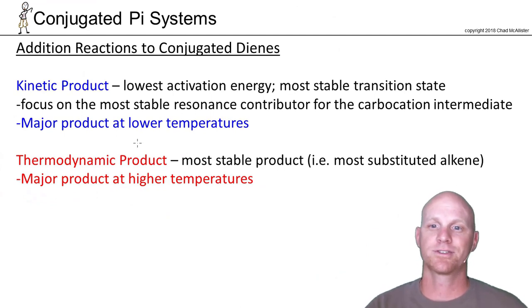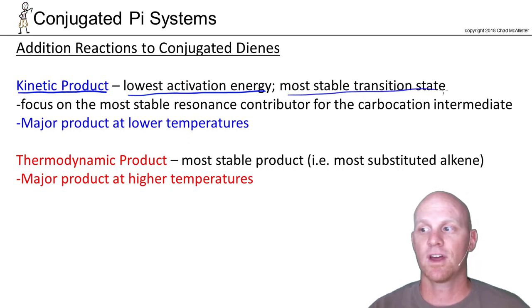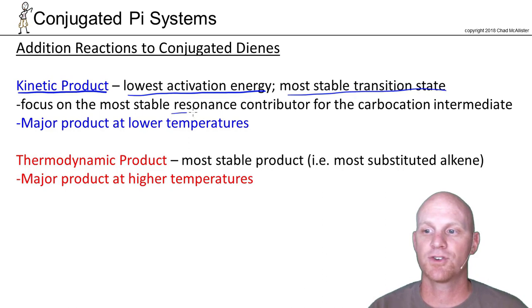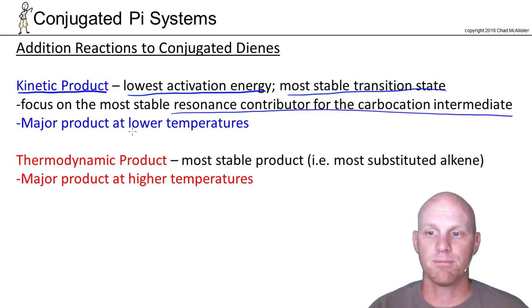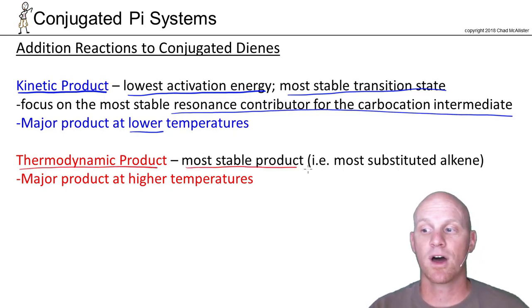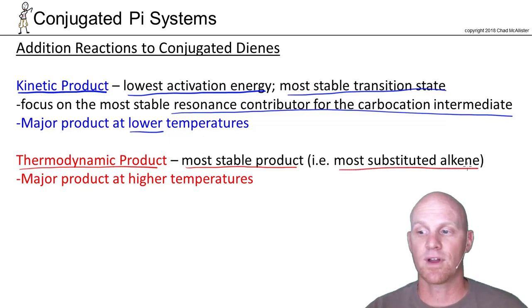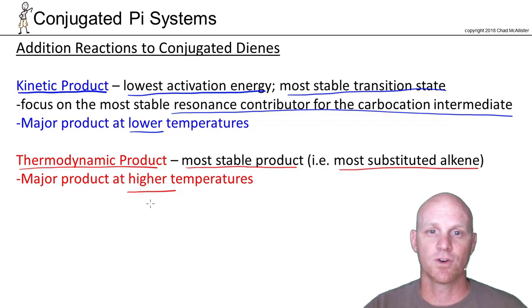Quick review: the kinetic product has the lowest activation energy — meaning the most stable transition state — and you focus on the major resonance contributor of the carbocation intermediate; it is the major product at lower temperatures. The thermodynamic product is simply the most stable product, usually the most substituted alkene, and it is the major product at higher temperatures.